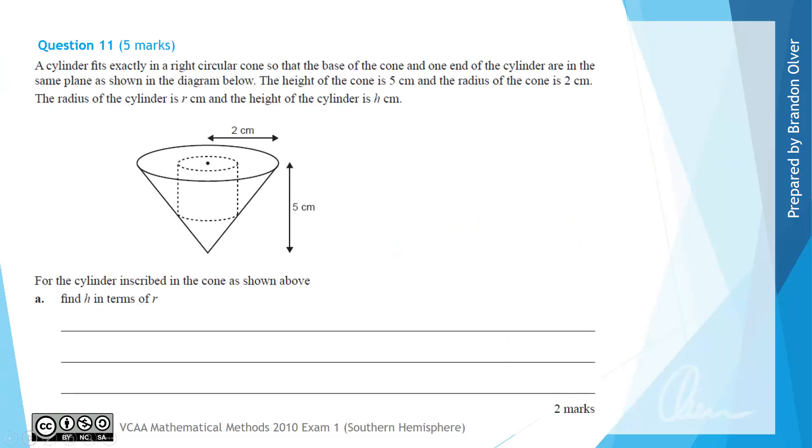For question 11 we're told that a cylinder fits exactly into a right circular cone so that the base of the cone and one end of the cylinder are in the same plane as shown in the diagram below. The height of the cone is 5 cm and the radius of the cone is 2 cm. The radius of the cylinder is r cm and the height of the cylinder is given by h cm. For the cylinder inscribed in the cone as shown above, for part A we want to find h in terms of r.